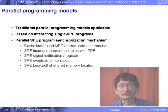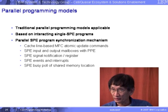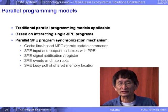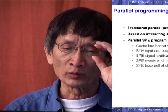Parallel programming models — this is the traditional parallel programming model in your existing architectures, also applied to the Cell environment. This is based on the interaction of single SPE programs. We implement parallel SPE programs here; synchronization mechanisms are provided via MFC atomic update commands. Remember the MFC architecture has various components: the MMU for memory address translation, and Atomic to handle cache coherency. We use mailboxes and buffers for interaction.